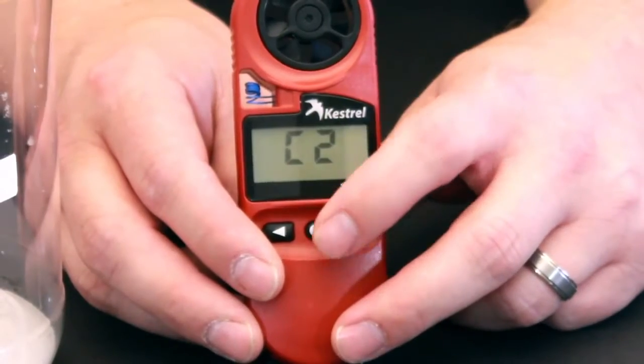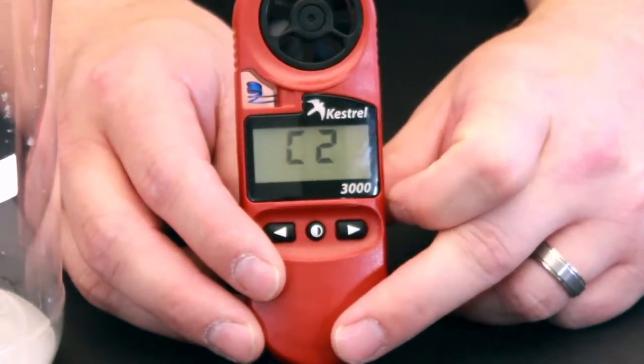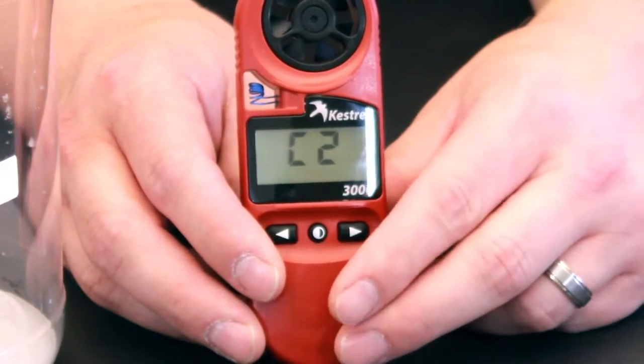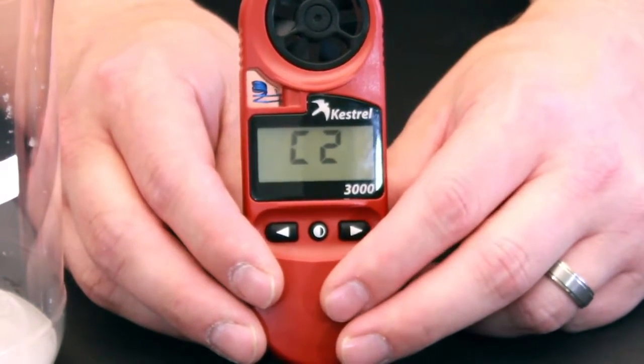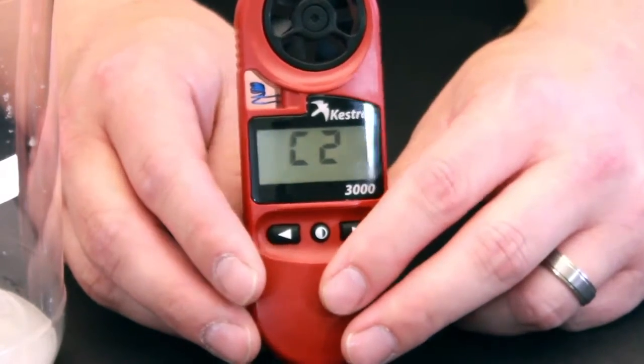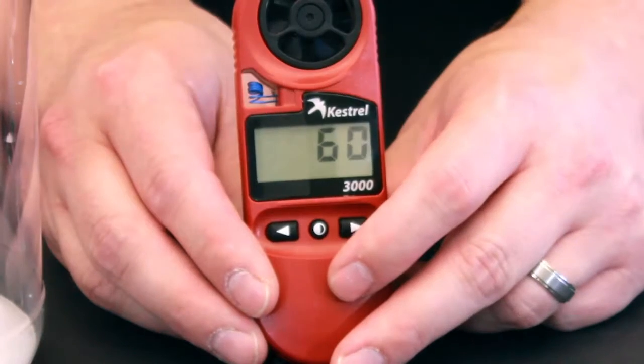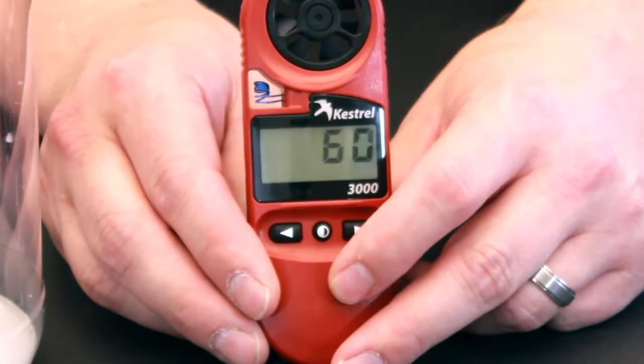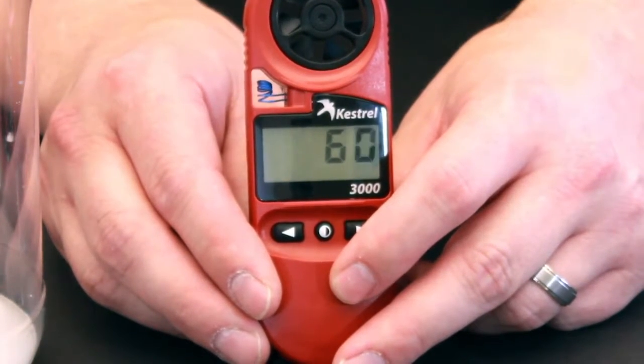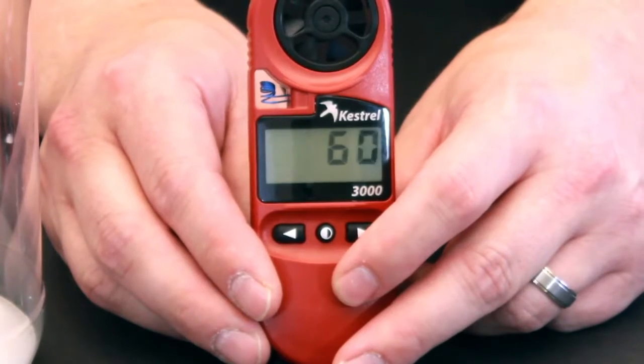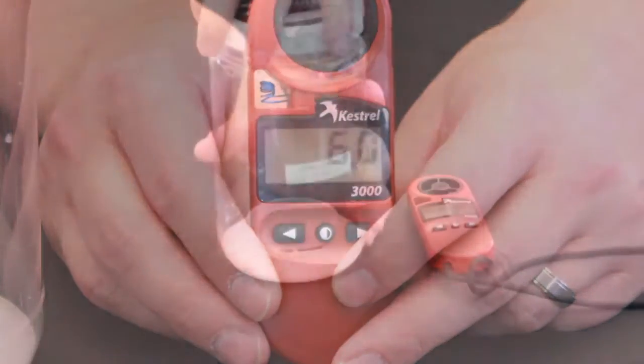We've wiped off the Kestrel and now we see that there's C2 on the screen. This means it's calibration of the second jar of sodium chloride. So when we're ready, we'll pull our sodium chloride jar out and hit the button, and you'll see it start counting down from C2 to 60. That means 60 minutes in the sodium chloride chamber.